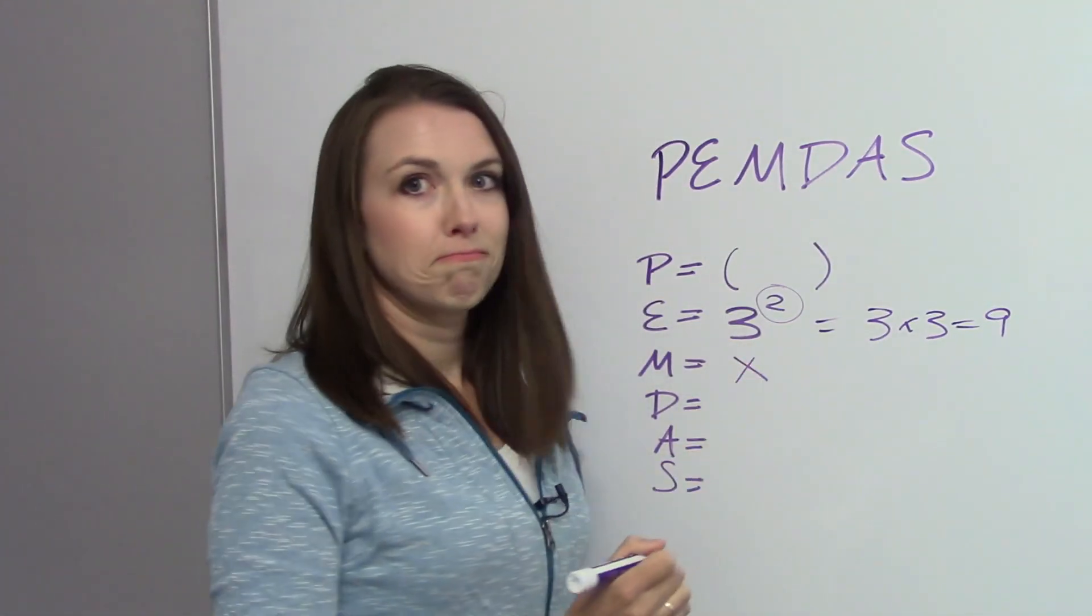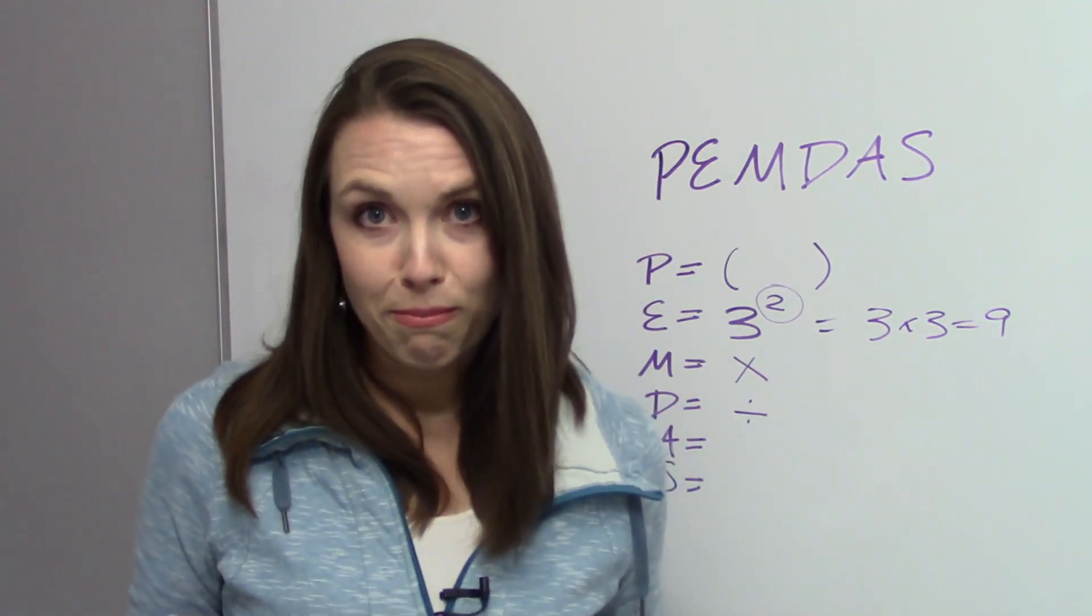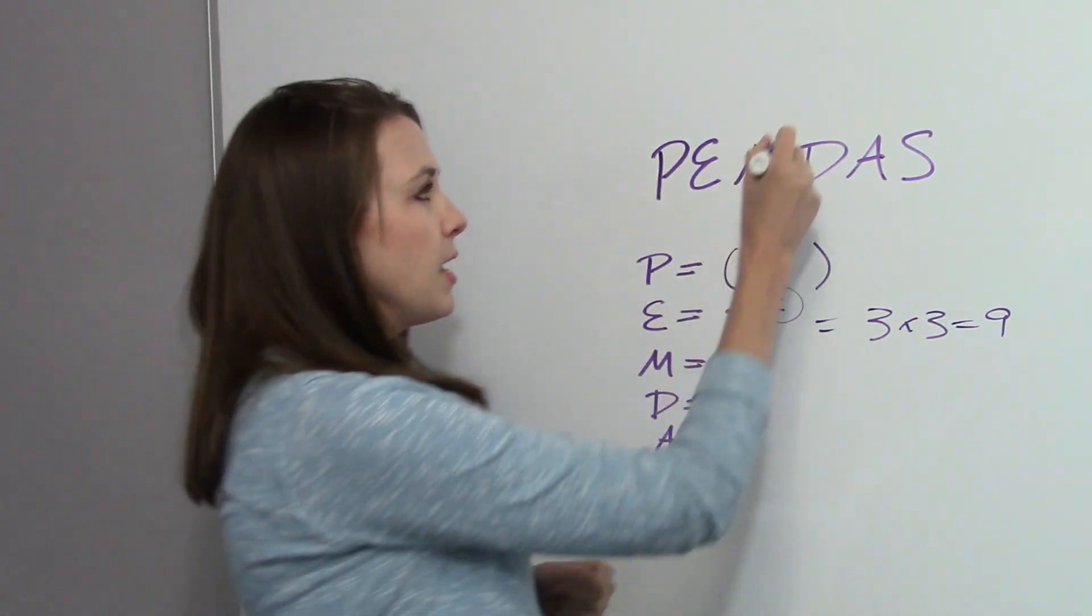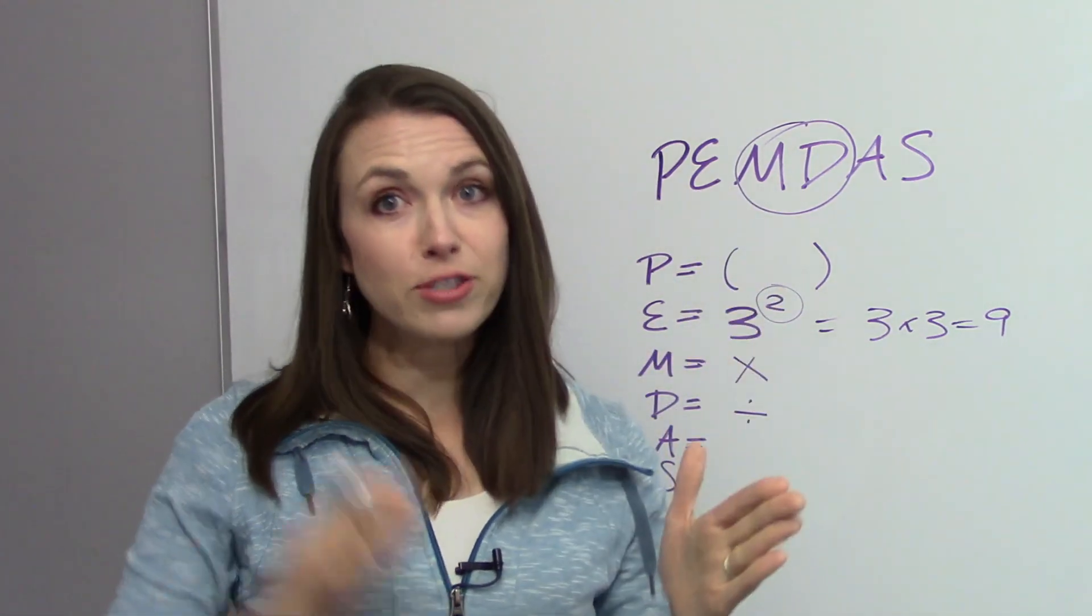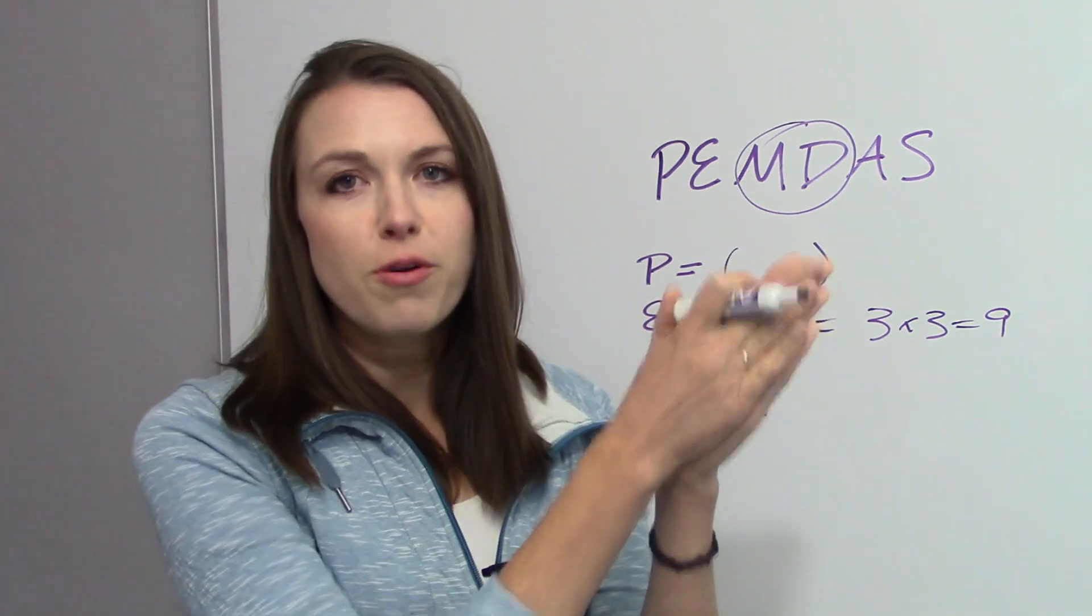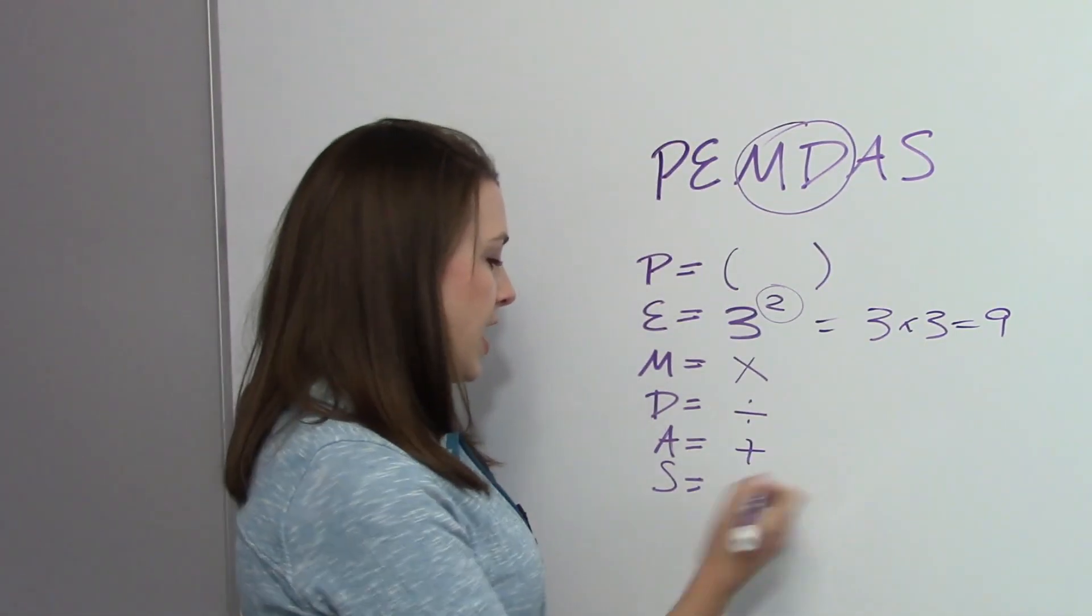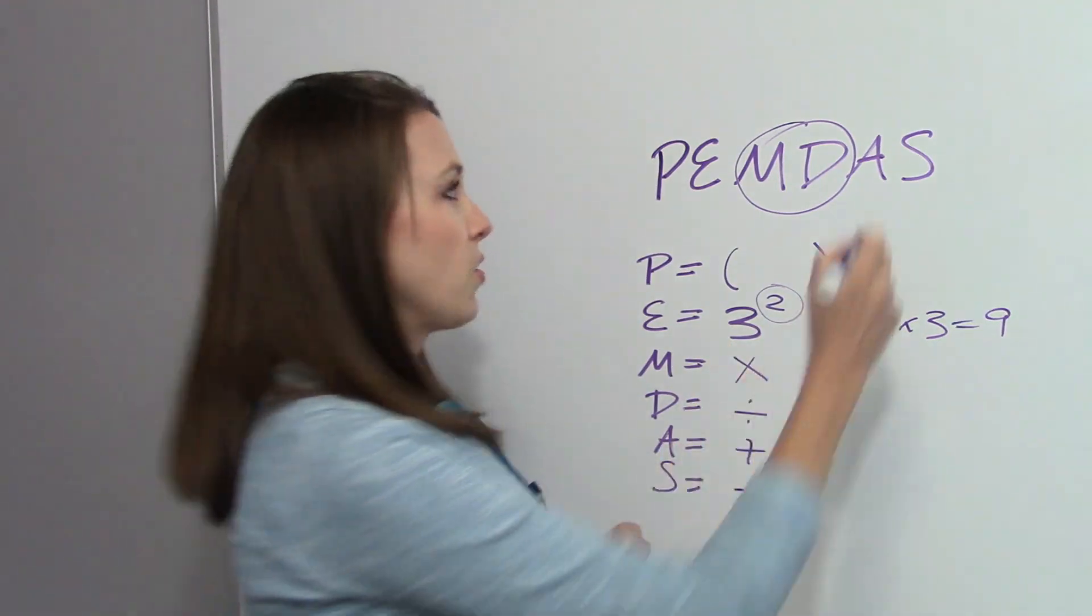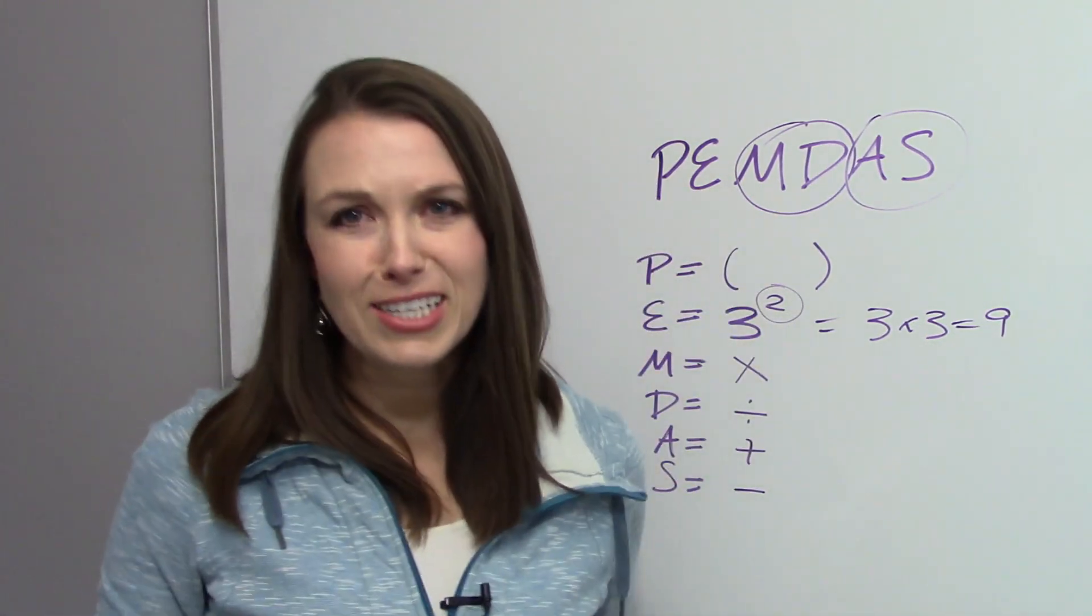Multiplication. And then we have the D is division. Now, one thing I want you to remember is even though we're going in a specific order, we start with parentheses, then we do exponents. But multiplication and division, they're buddies. So you go from left to right, just like you're reading. So if there's a division first, you do that first. Follow from left to right. Then we have A, which is addition, and S, which is subtraction. And again, those two are also buddies. So we have PEMDAS, please excuse my dear Aunt Sally.